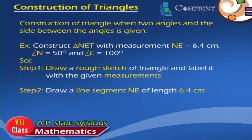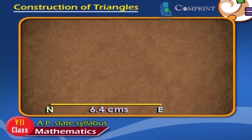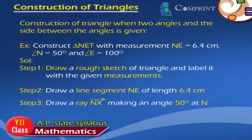Solution. Step 1: Draw a rough sketch of the triangle and label it with the given measurements. Step 2: Draw a line segment NE of length 6.4 cm. Step 3: Draw a ray NX making an angle of 50 degrees at N.